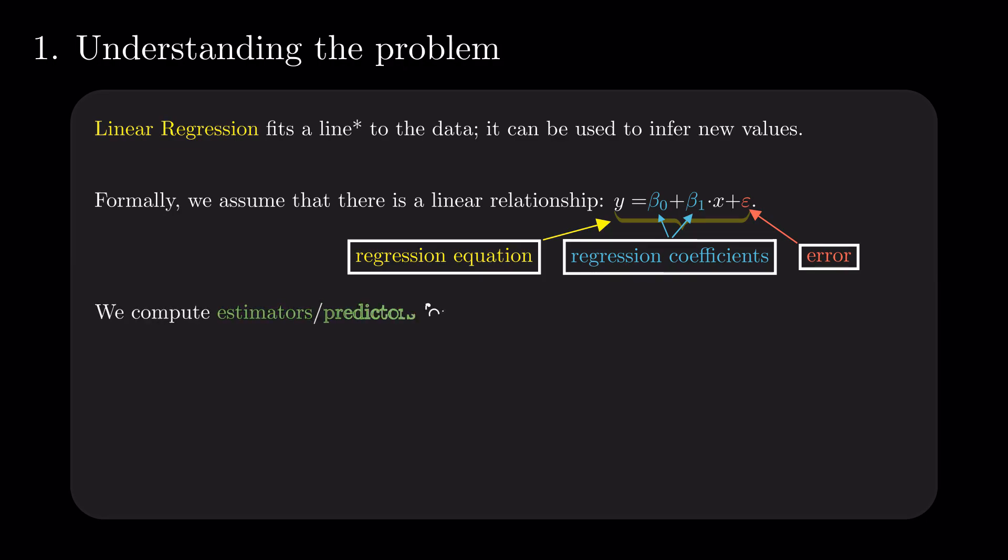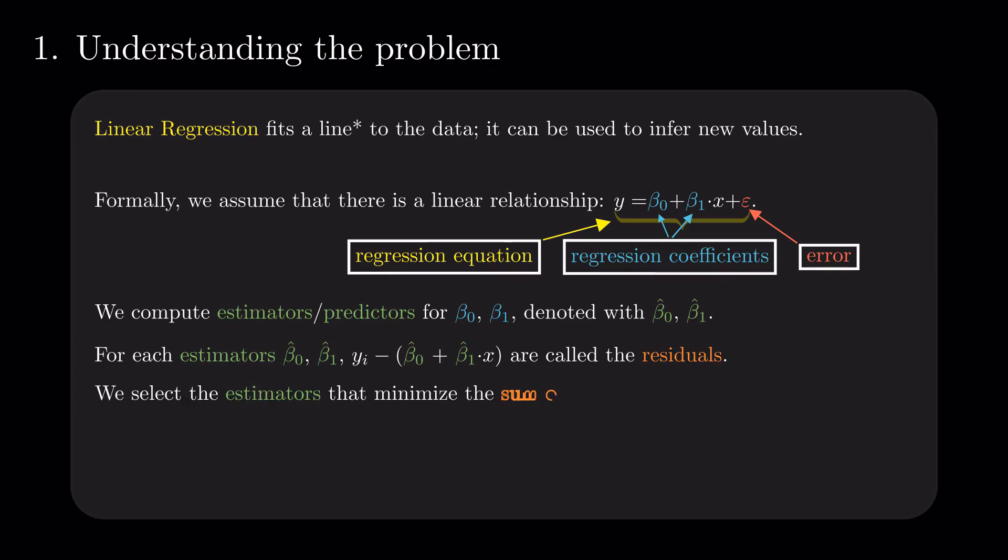The logical next step is to estimate the values of the parameter β. The difference between the actual and estimated values is called the residual. We want to select the estimators in such a way that we minimize the sum of squared residuals.